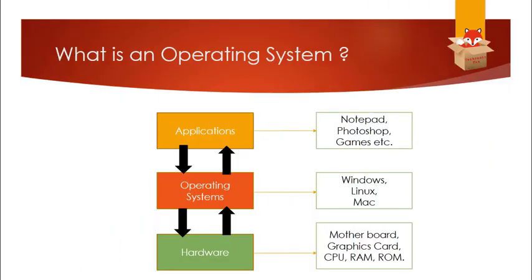What is an operating system? We can see that the application needs to communicate with the hardware. For example, the applications are Notepad, Photoshop, games, etc. While playing games, the games need to interact with the graphics card and hardware. So the applications can't directly communicate with the hardware — it needs some sort of translator, some sort of interface.